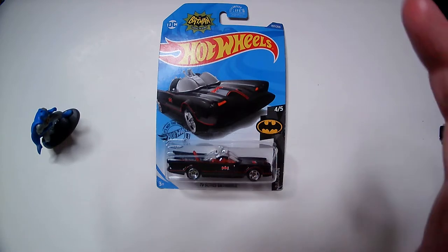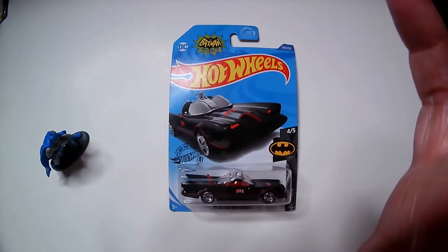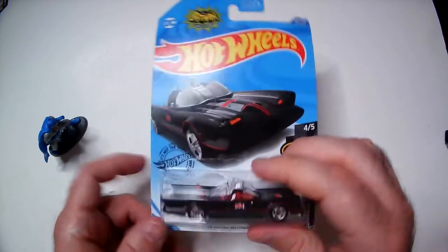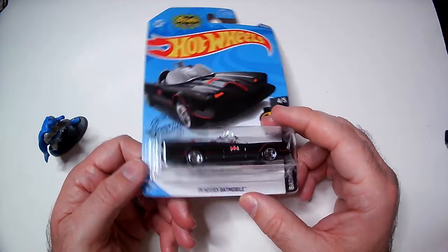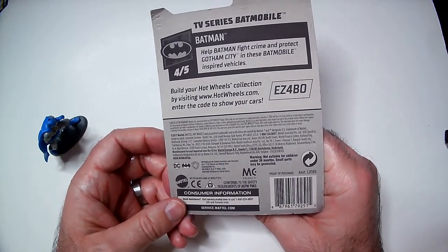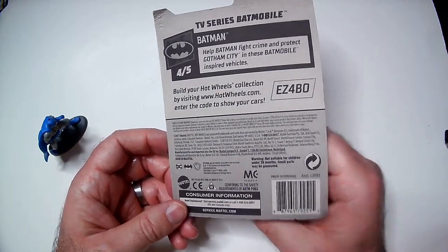To start out my Batmobile Hot Wheels collection, we have my favorite Batmobile. It's the 66 TV series Batmobile with the classic black and red. It has chrome wheels. It came out of series four out of five. That's the TV series Batmobile up top.